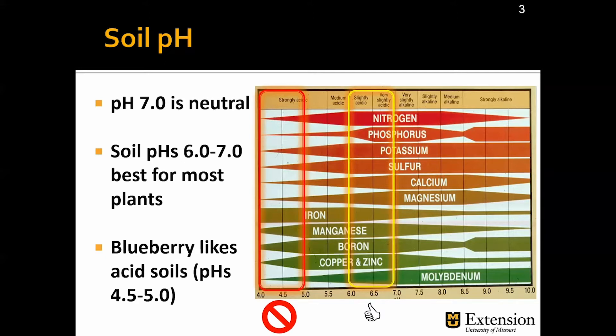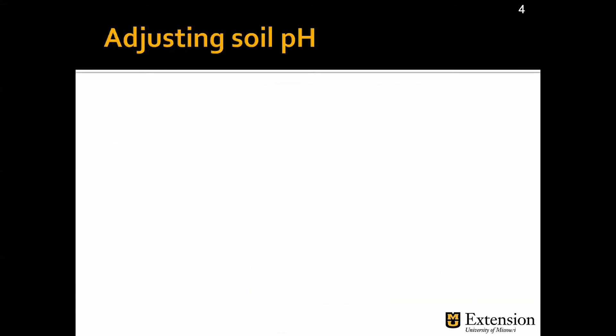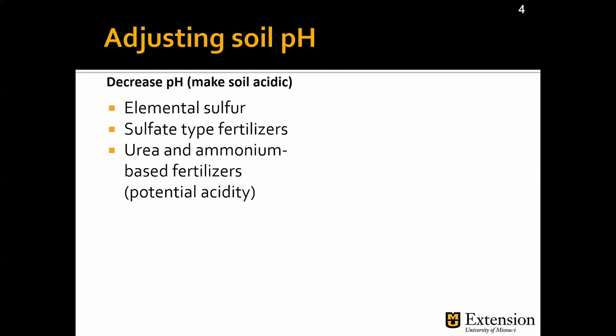So you tested the soil, you figured out your pH, and you notice that your pH is out of range. So what do you do to adjust the pH of the soil? To decrease the pH — when the pH is too high and you want to make it more acidic — you can use elemental sulfur, sulfate-type fertilizers, or fertilizers in which most of the total nitrogen is provided by urea or ammonium. Look at the label for the potential acidity of these fertilizers. You can also use organic amendments such as incorporation of peat moss and plant residue.